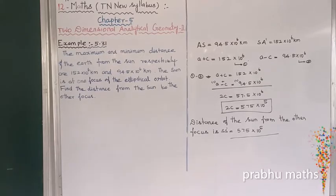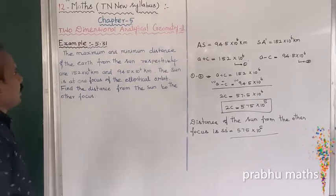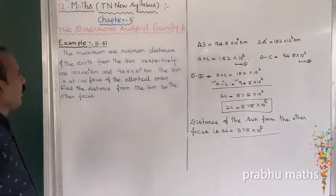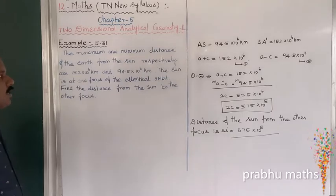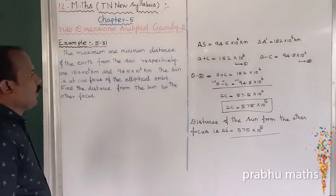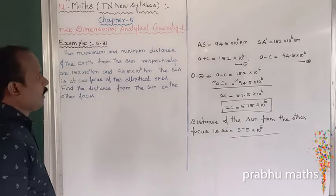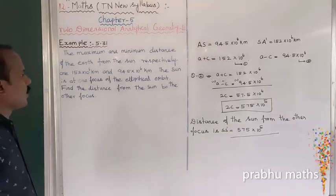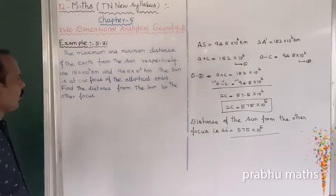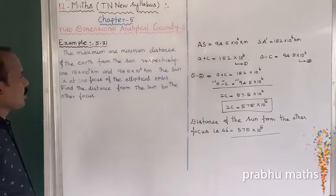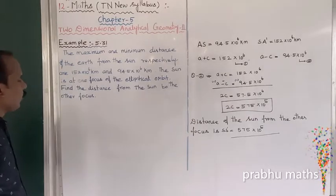Example 5.31: The maximum and minimum distances of the Earth from the Sun are 152×10⁶ km and 94.5×10⁶ km respectively. The Sun is at one focus of the elliptical orbit. Find the distance from the Sun to the other focus.